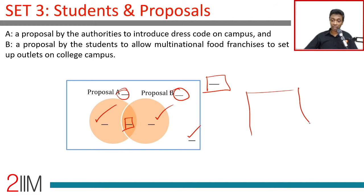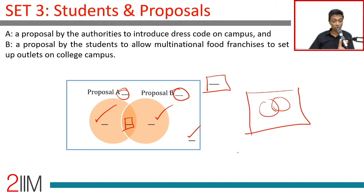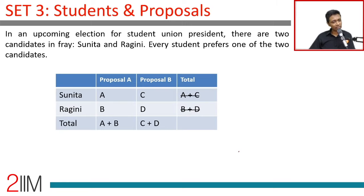I'm not going to put Sunita and Ragini in a Venn diagram format because there's no 'Sunita and Ragini' overlap and no 'neither Sunita nor Ragini' — every student votes for one of the two. So the candidate dimension I'll capture as a table: proposal A and Sunita, proposal B and Sunita, proposal A and Ragini, proposal B and Ragini.